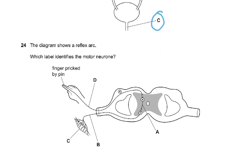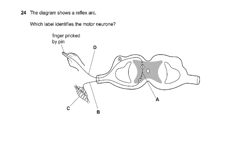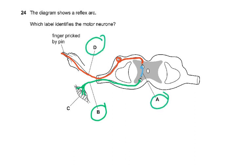The diagram shows a reflex arc. Which label identifies the motor neuron? The sensory neuron is here with the cell body, then we have the relay neuron, and then the motor neuron, which goes to a muscle. C is the muscle — the effector — which contracts and moves your arm. The answer for the motor neuron is B. If they had asked sensory neuron, it would be D; relay neuron would be A; effector or muscle would be C. You can make four MCQs out of this one question.